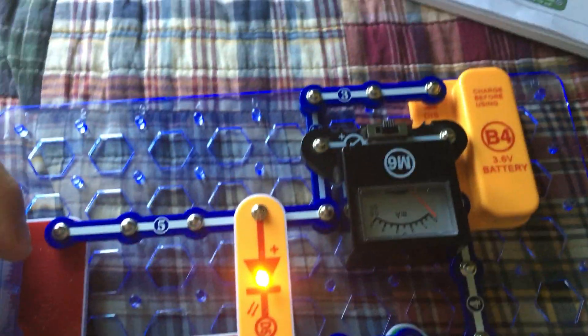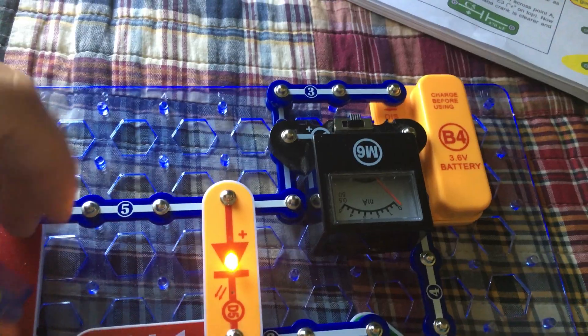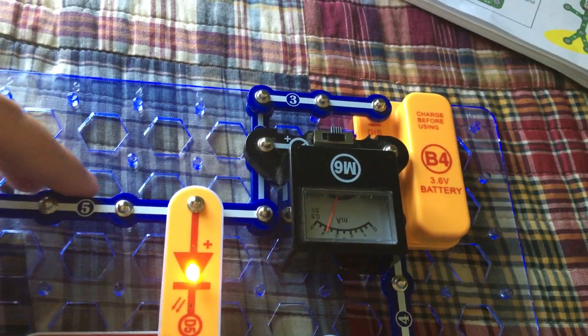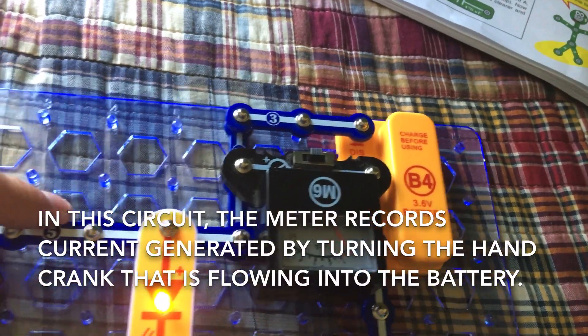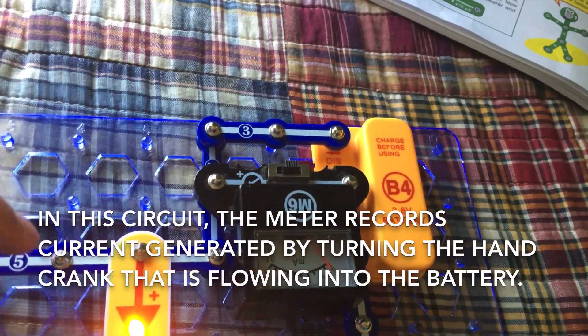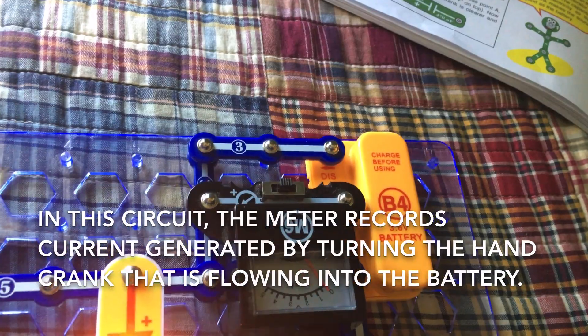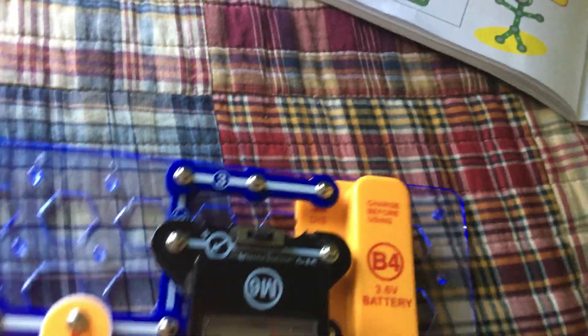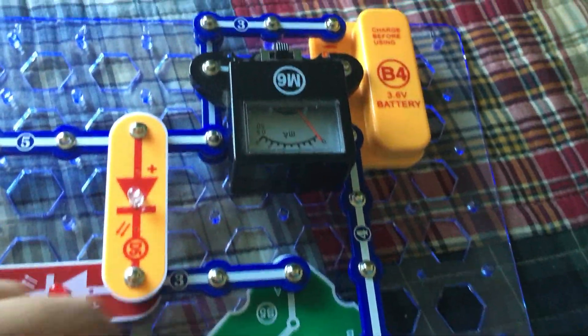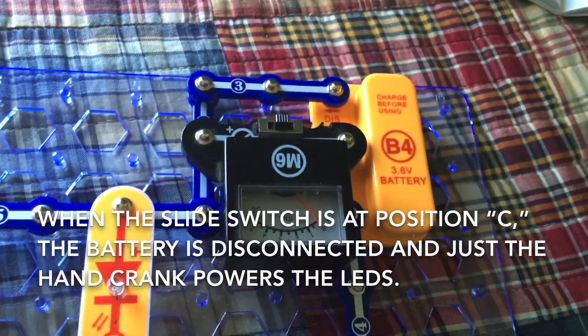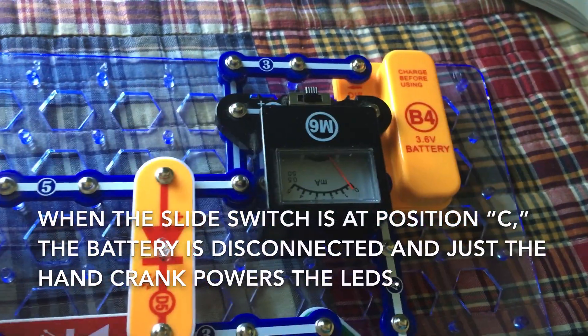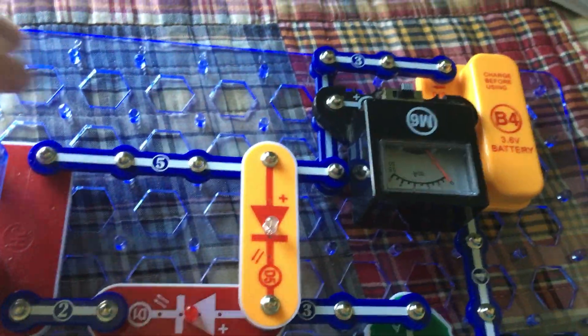But, when I turn the hand crank, the meter, if I turn it fast enough, the meter, as you can see, records the current that is flowing into the battery. Not out of the battery. If you turn the slide switch to position C, then, only the hand crank will be able to run the LEDs. The battery is disconnected.